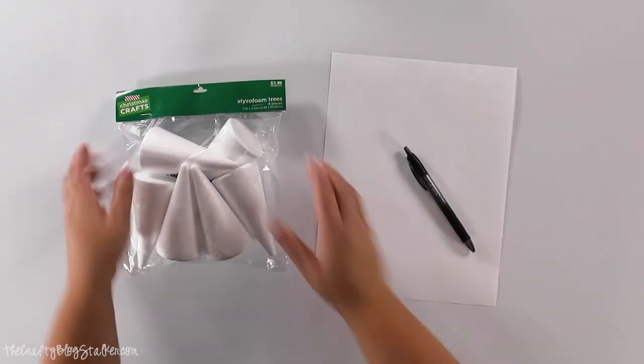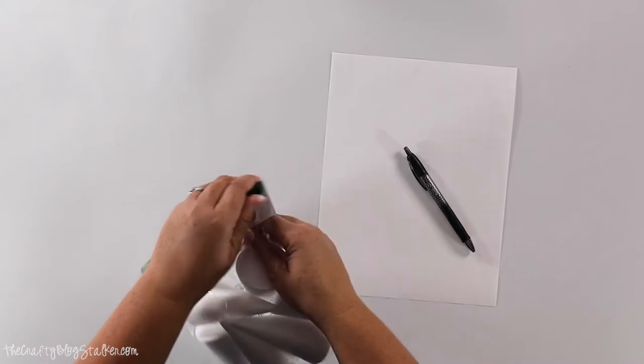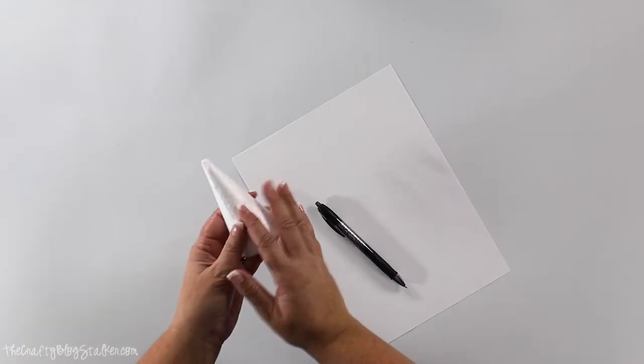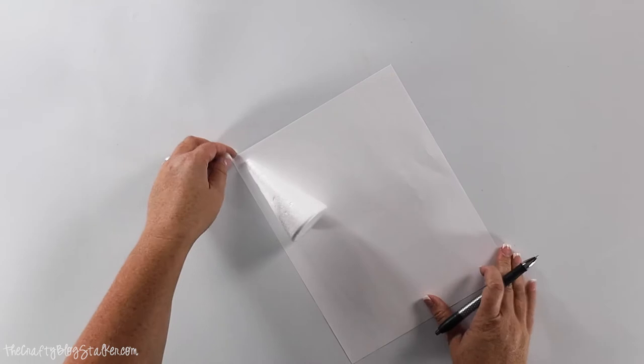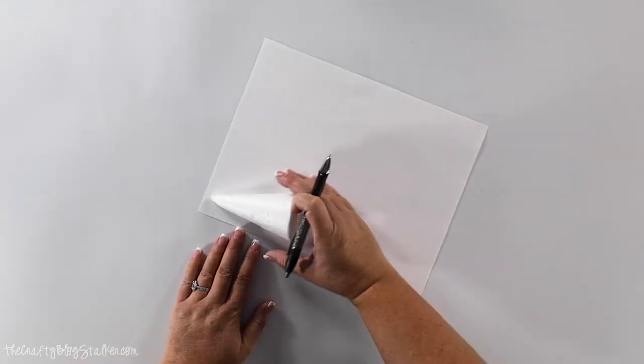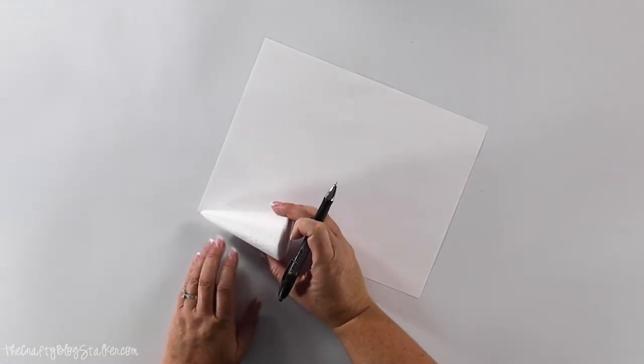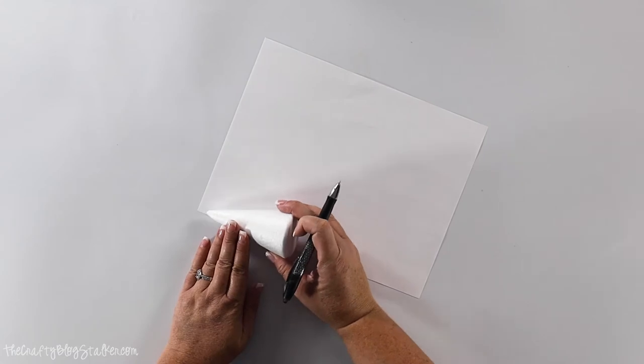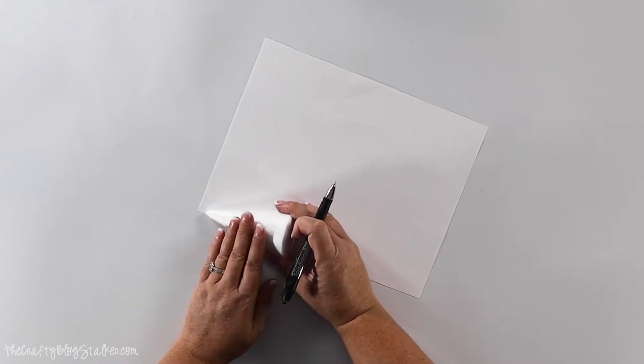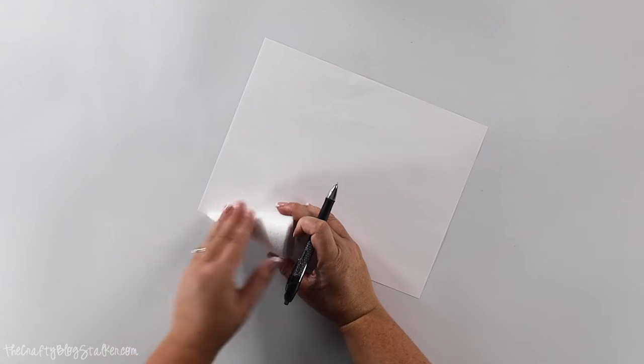We're going to start with our styrofoam tree. So I'm just going to go ahead and open those up. The first thing we're going to do with our styrofoam tree is create a template for us to use. So you can do this with any size styrofoam tree. Mine is a little bit taller than four inches. And I'm going to lower this down from the corner, maybe a half of an inch.